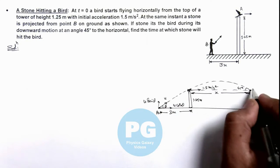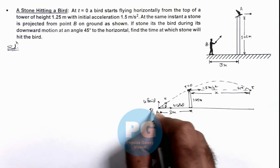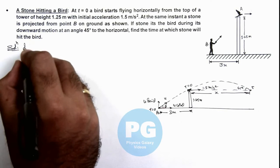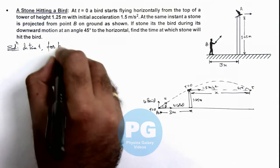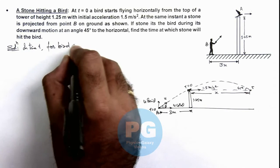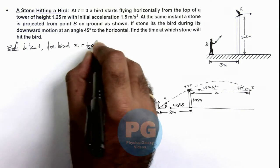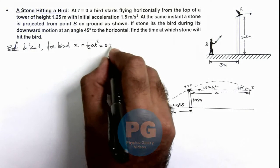Say the stone hits the bird at time t, and this is time t equal to zero when the stone is also thrown. In time t, for the bird we can write the displacement covered in horizontal direction is half a t square, where a is 1.5, so this will be 0.75 t square.